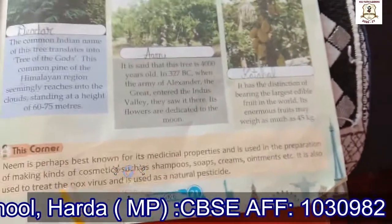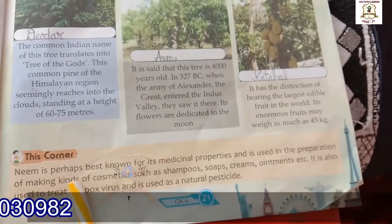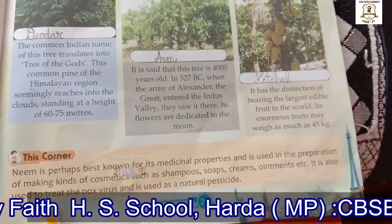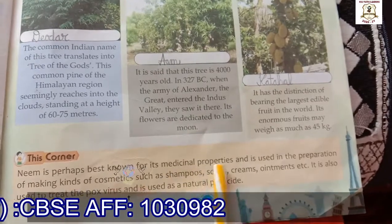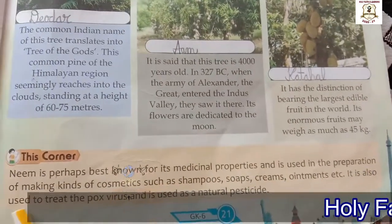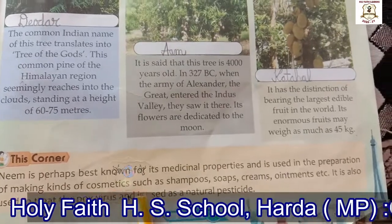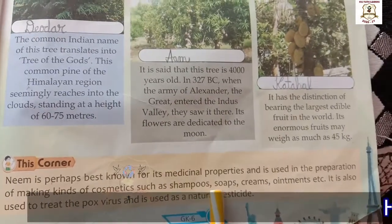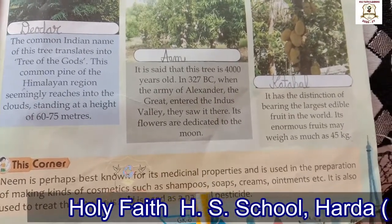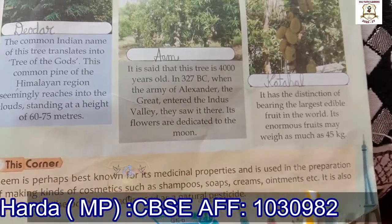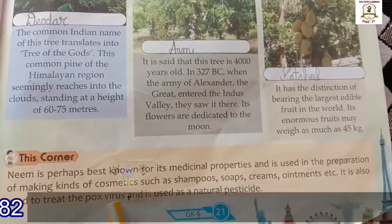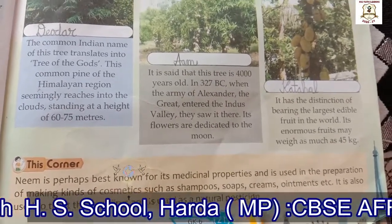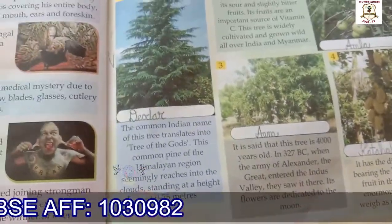Now look at the next tree — Neem. Neem is best known for its medicinal property and is used in the preparation of cosmetics such as shampoos, soaps, creams, and ointments. It is also used to treat the pox virus and is used as a natural pesticide.